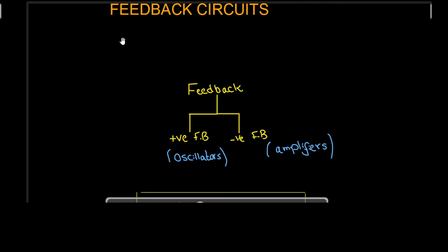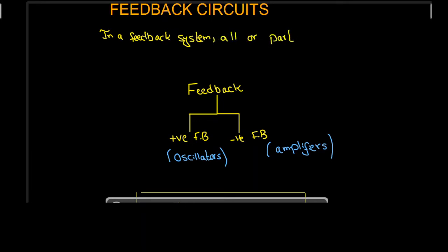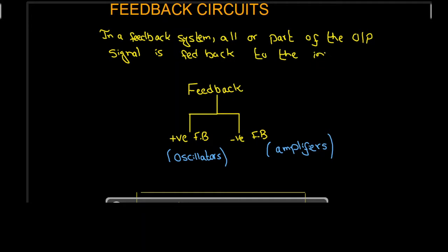Welcome to Technically Explained. In this lecture we will study feedback circuits or feedback networks. In a feedback system, all or part of the output signal is fed back to the input. That output signal can be anything — it can be voltage or it can be current. Depending upon the relative polarity of the feedback signal with respect to the input signal, we have two types of feedback: positive feedback and negative feedback.